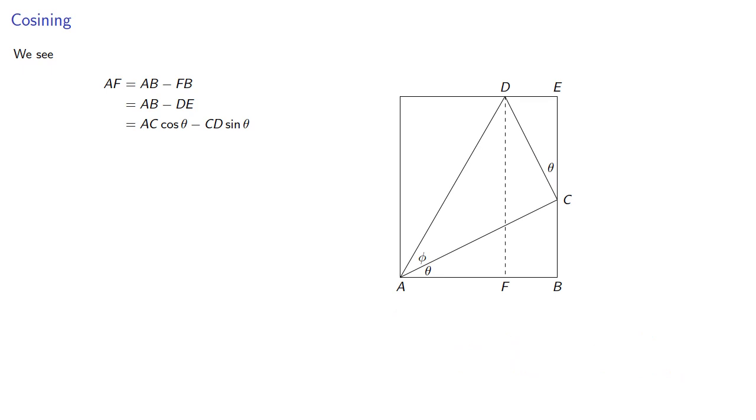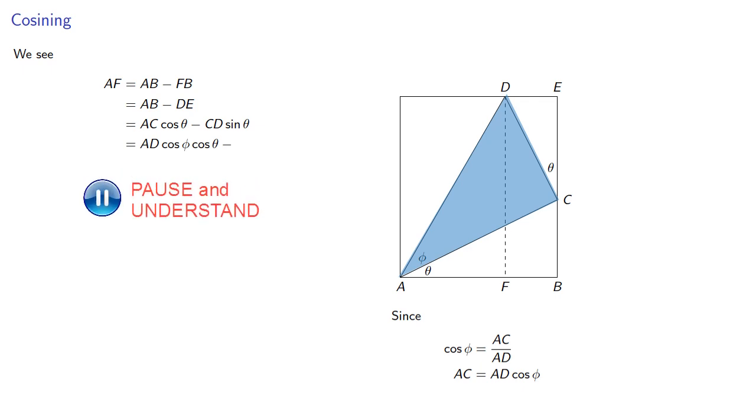Now we also need AC and CD, and they're both in this right triangle. So cosine phi is AC over AD, so AC is AD cosine phi. And sine of phi is CD over AD, and so CD is AD sine phi.